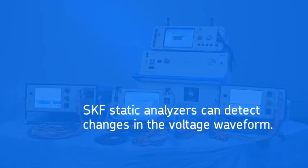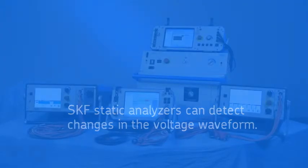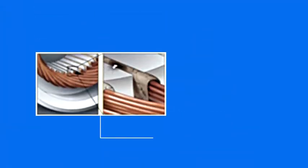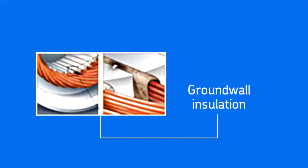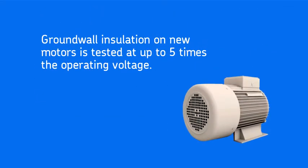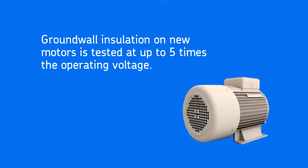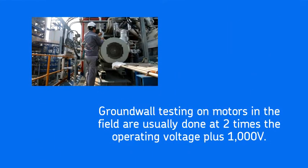The ground wall insulation is the insulation between the stator windings and the stator core. When the motor is new, this ground wall insulation is tested at voltages up to five times the operating voltage. For motors in the field, ground wall testing is usually done at two times operating voltage plus 1000 volts.